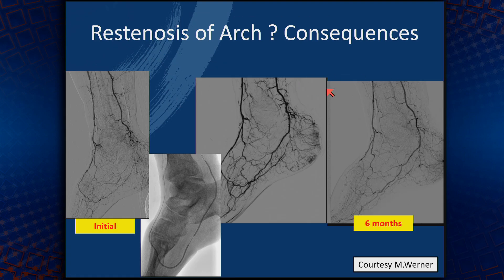What if you get away with it, and what are the consequences of restenosis? In an initial angiogram treated with extensive balloon angioplasty, the control angiogram at six months leads you to wonder whether the restenosis you've seen is actually predisposing the patient to subsequent ischemia.